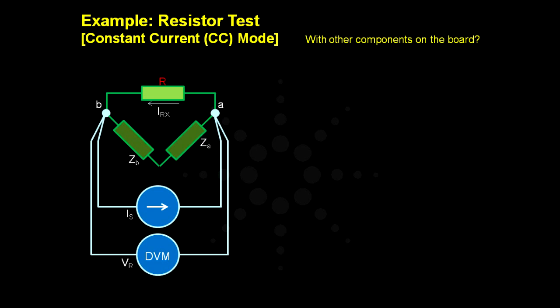Similarly, as in the case of constant voltage source, there is a leakage IA from the source current into the parallel path. So IS is not equal to IRX, so the measured resistance is not the same as the actual resistor.